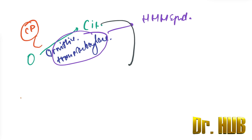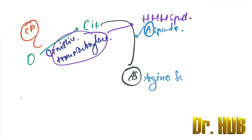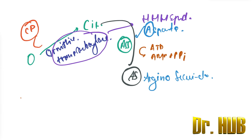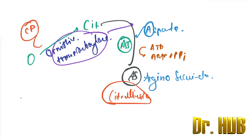Next, citrulline is converted to arginosuccinate (AS). In this step, aspartate is added, and ATP is converted to AMP plus PPI. The enzyme involved is arginosuccinate synthase (ASS). A defect in ASS leads to citrullinemia.